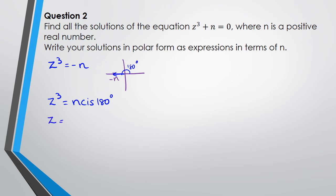Which means z could be written as n cis 180 to the power of 1/3. With this we can say that the first root is going to be n to the power of 1/3 cis (180 times 1/3), so we can say that the first root is n^(1/3) cis 60 degrees.